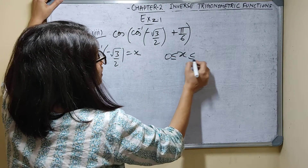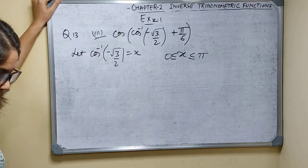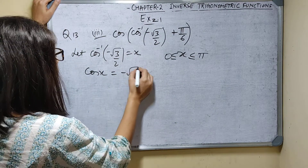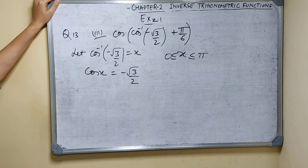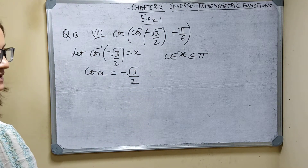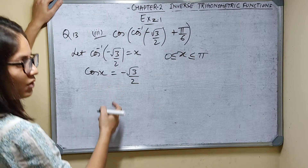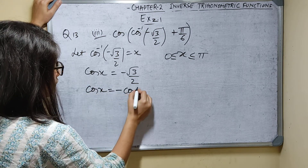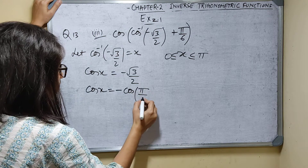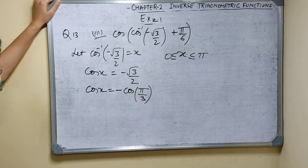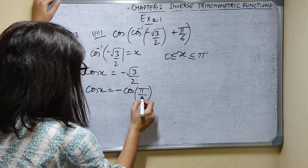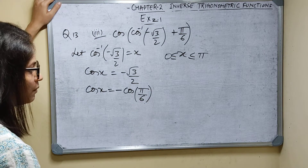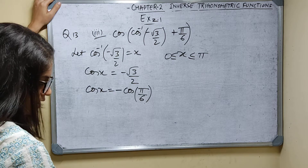Cos x equals minus root 3 by 2. Root 3 by 2 is the value of cos pi by 6 (i.e., cos 30 degrees). So cos x equals minus cos pi by 6. Now cos of minus theta is not minus cos theta, so I cannot directly write cos of minus pi by 6.